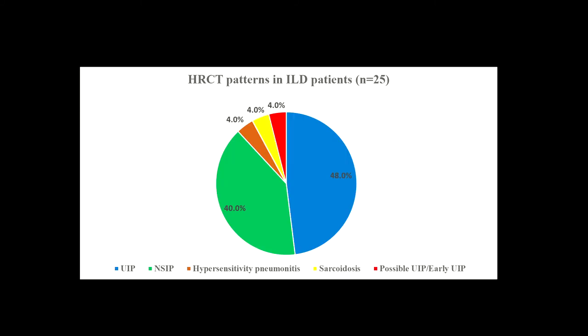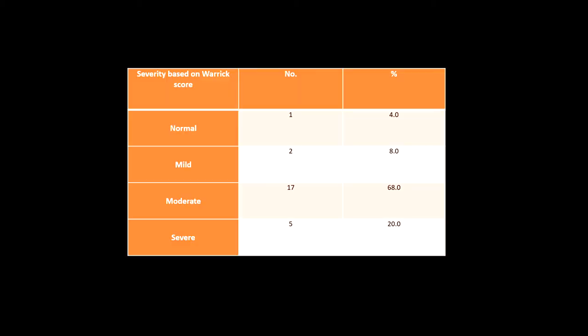UIP and NSIP were the predominant HRCT patterns in ILD patients in our study. Hypersensitivity pneumonitis, sarcoidosis, and early UIP pattern were each seen in 1 patient. Based on Varic score, patients were categorized as having mild, moderate, and severe disease. Most patients had moderate disease, and 5 patients had severe disease.